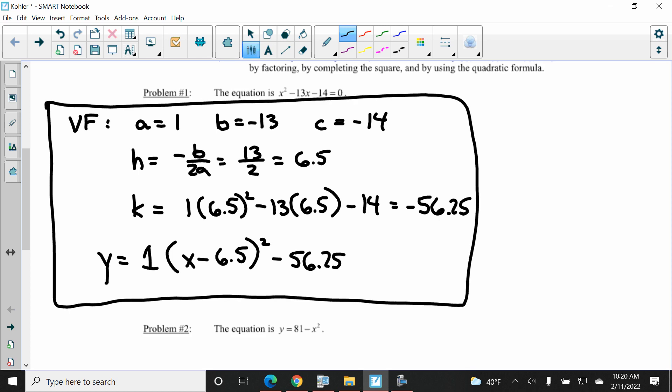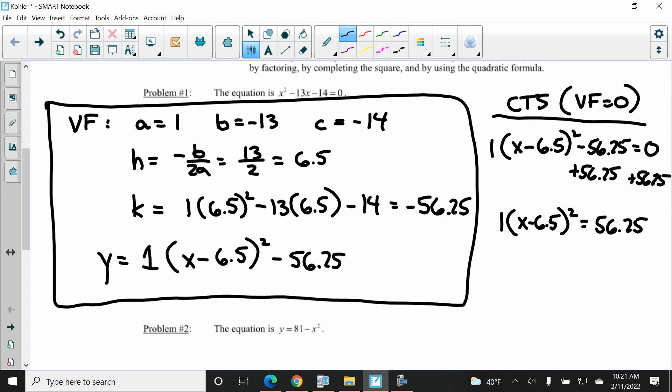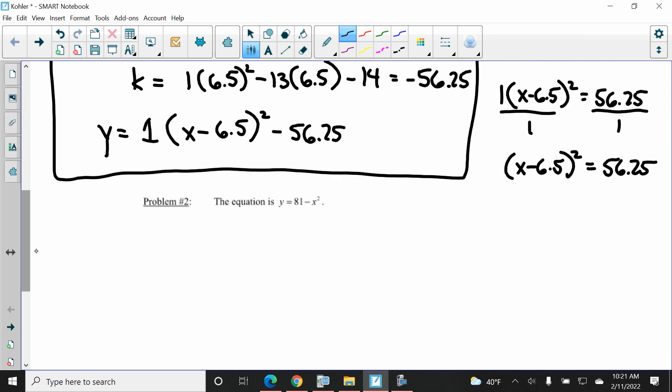I should write smaller. Completing the square, set your vertex form equal to 0. This is the cheater's way. So 1(X minus 6.5) squared minus 56.25 is equal to 0. We add 56.25 to both sides. 1 times (X minus 6.5) squared is equal to 56.25. We divide by 1 to both sides. X minus 6.5 squared is equal to 56.25. We take the square root of both sides.